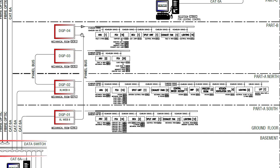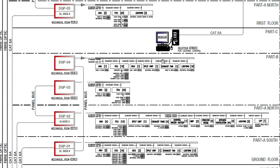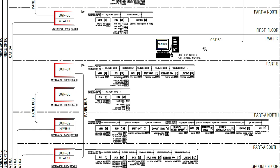Similarly, DGP1 is connected to DGP4 using the same panel bus communication, and DGP4 is also a slave panel. The diagram includes equipment information for DGP3 and DGP4. There is also an additional workstation shown here for lighting control at the reception, providing limited access so that staff can turn lights on and off and view lighting status.